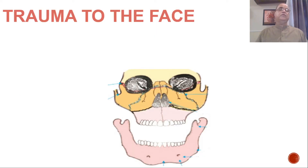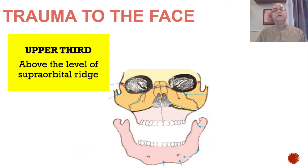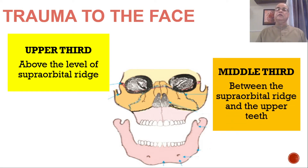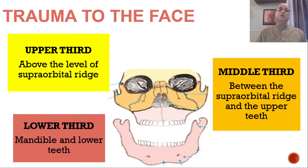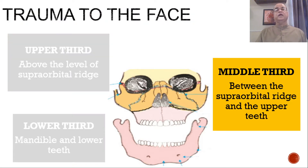Regarding trauma to the face or faciomaxillary injuries, we anatomically divide it into three portions. The upper third of the face is that portion which is above the level of the supra-orbital ridge — it includes the frontal bone and frontal sinuses. The middle third is very important because so many structures are there; it is the area between the supra-orbital ridge and the upper teeth. The lower third includes basically the mandible and lower alveolus along with the lower teeth. So this is the middle third of the face we are concerned with today.